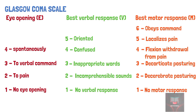Patients who are intubated are unable to speak, thus their verbal score cannot be assessed. They are evaluated only based on eye opening and motor scores, and the suffix T is added to their score to indicate intubation. In an intubated patient, the maximum GCS score is 10T and the minimum score is 2T.